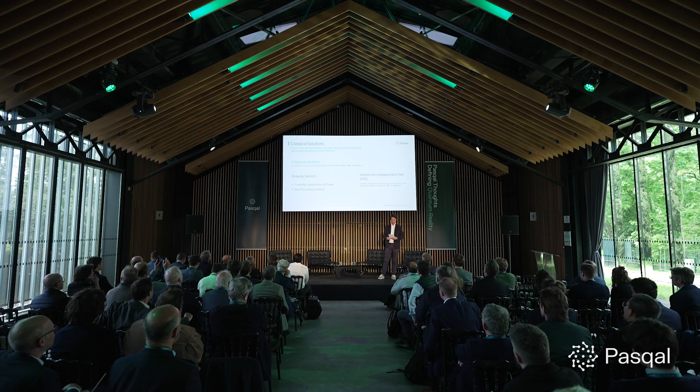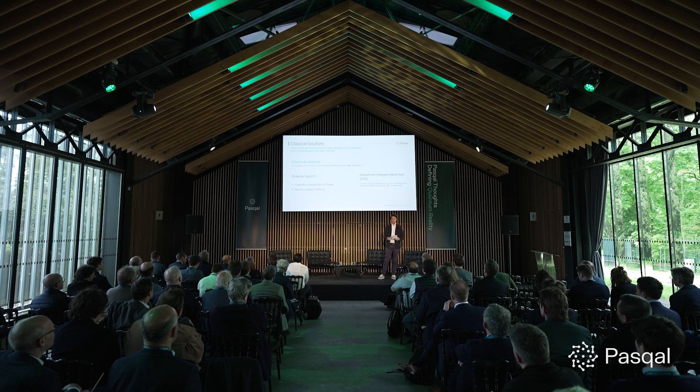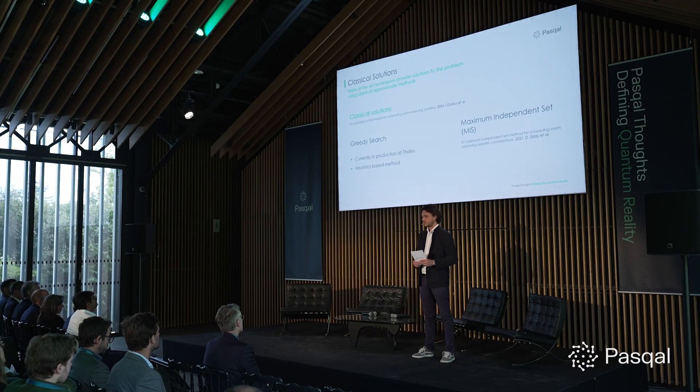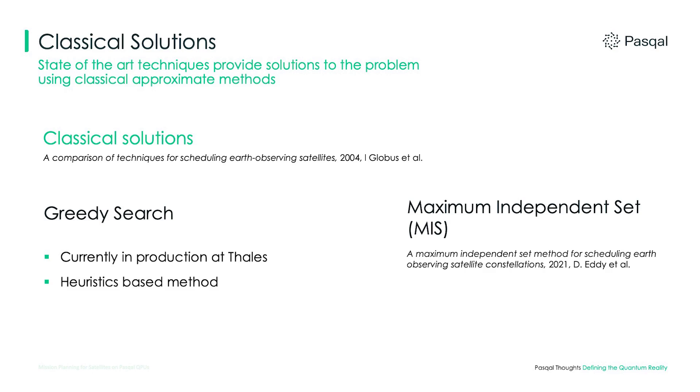The problem I just presented is a computationally complex optimization problem: assign missions to satellites, maximize the number of missions fulfilled, and respect the constraints mentioned earlier. Finding an optimal solution is extremely hard. Many approximate algorithms exist for earth-observing satellites, and Thales currently uses a greedy method combined with domain-specific heuristics in production. During our exploration, we came across a recently developed method that maps the scheduling problem into finding maximum independent sets in graphs, and this led us to design our solution.